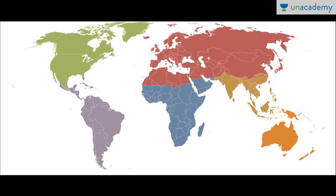Here is a world picture. The red color — the largest area — is the Palearctic realm. Tropical Asia shows the Oriental realm, and these two realms are separated by the Himalayan ranges. Africa is covered by the Ethiopian realm. Australia shows the Australian realm. North America is the Nearctic realm, and South and Central America form the Neotropical realm. These are the six biogeographical realms classified by A.R. Wallace.